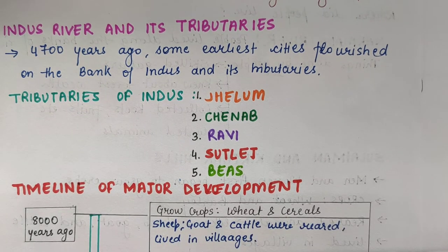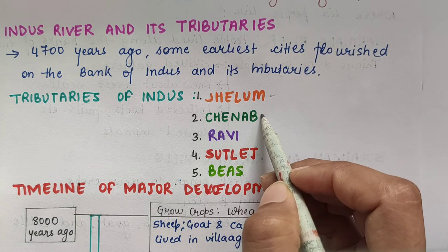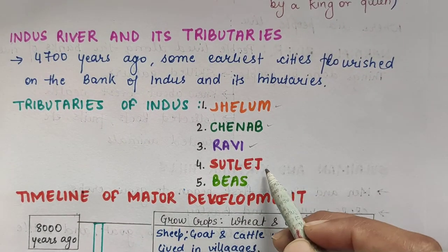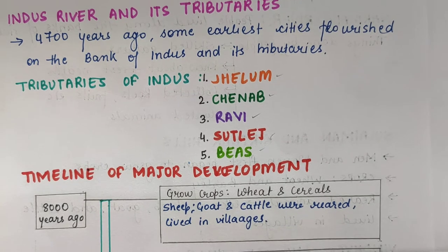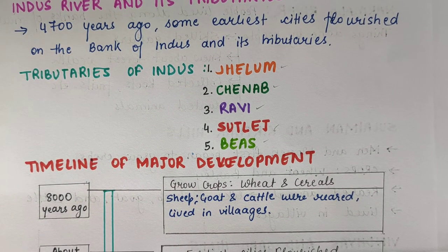Do not forget its tributaries — because there are five tributaries of the Indus that you need to remember. One is Jhelum, Chenab, Ravi, Sutlej and Beas. These were the rivers which were very important in ancient times, because near these rivers, people started to live and develop cities.